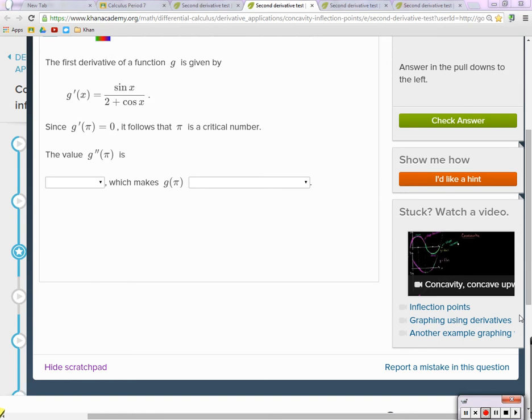We're going to find the second derivative, so let's find g double prime. For these, we need to use the quotient rule.